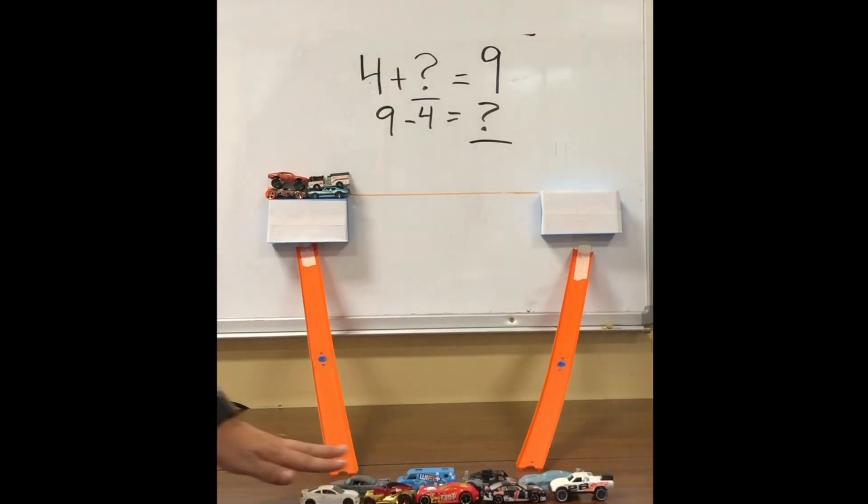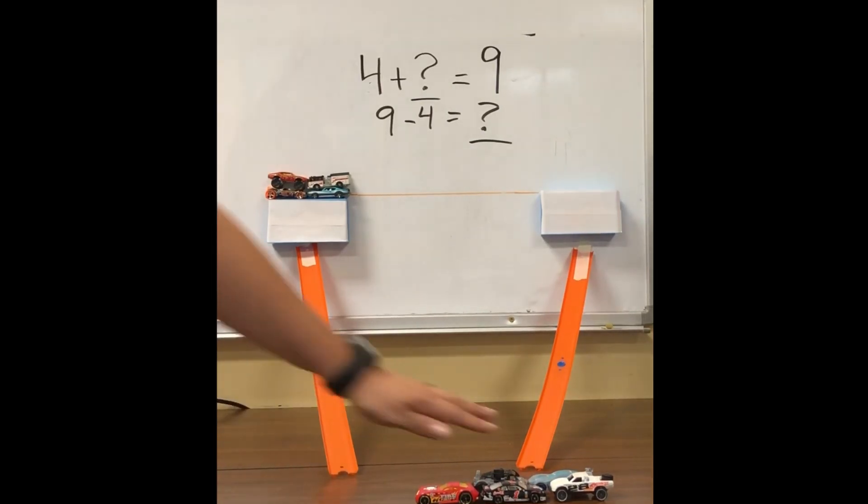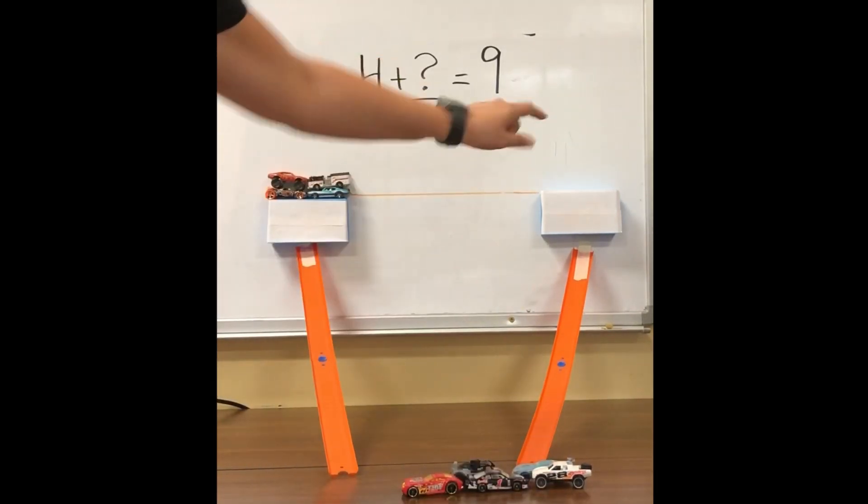So if we took all 9 cars and we took 4 of them away to represent one of the addends, we would find out what is left.